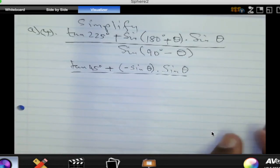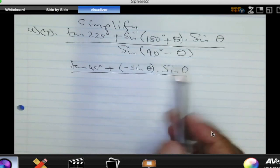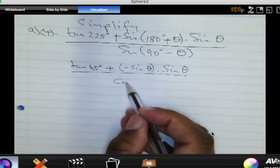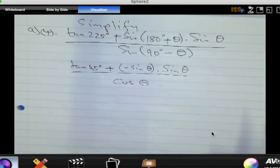Now, sine of 90 minus theta, when you see 90, you can think of co-ratios. So that will change to cosine. And that changes to cosine of theta. Okay, so we are using reduction formulae there and the co-function values.